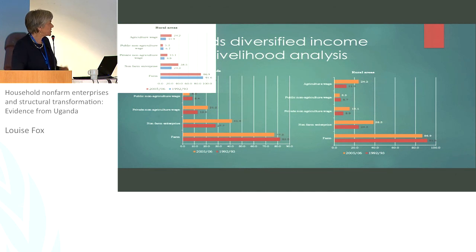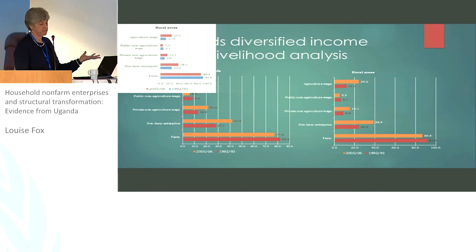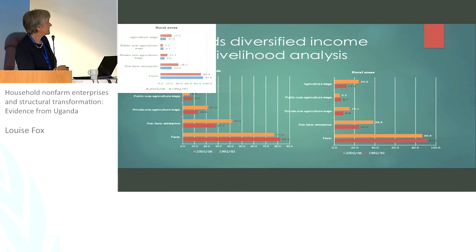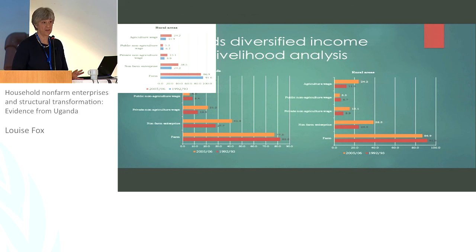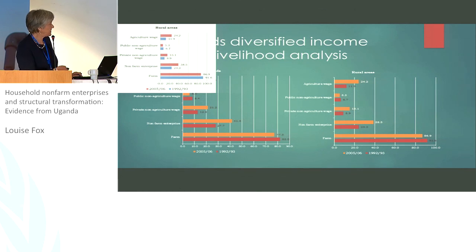Many households stayed in farming and some got out. What they did was add an income — a wage income or a non-farm enterprise income. Public sector wage employment is much smaller than private sector wage employment and much less spread among households. There was also growth of people working in agricultural wage, which is the lowest-paid activity. People earn even less there than on family farms in Uganda, and this is generally true around the world. In all of Uganda, there was faster growth of private non-agricultural wage and even bigger growth in the non-farm enterprise sector.